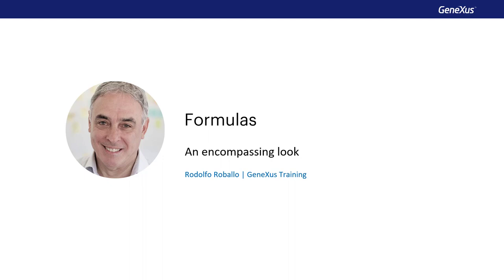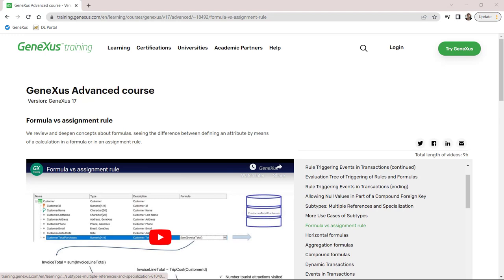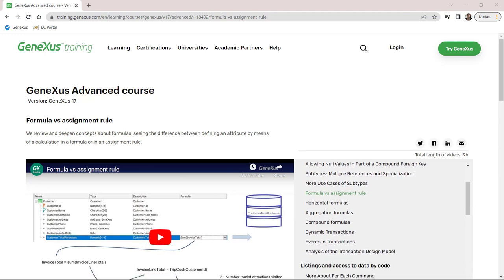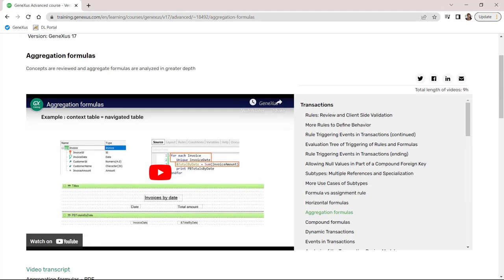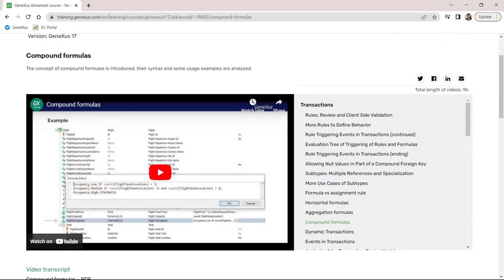Also, in which cases we have restrictions and how we can lift them, what's the cost of adding redundancy, and other observations that will help us integrate the concepts on this topic. If you have any doubts about the concepts of the formulas in this video, or you want to review them before watching this synthesis, we suggest you watch the videos on formulas of the Advanced GeneXus course.